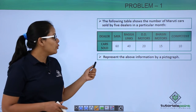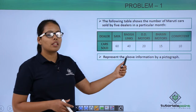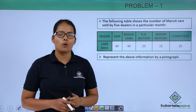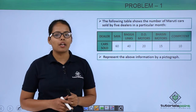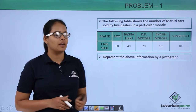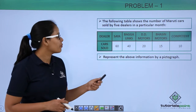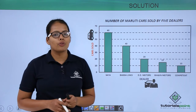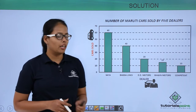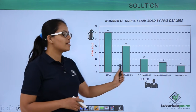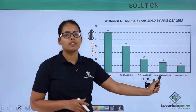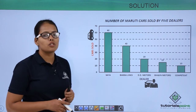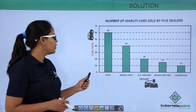Now you need to represent this data by a pictograph, which is also known as a bar graph. This is the bar graph for the given data, where the x-axis represents dealers and the y-axis represents cars sold by them.